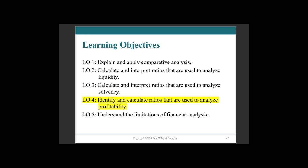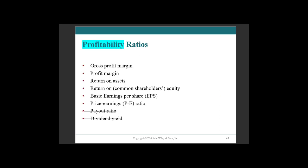How profitable are we? How are we doing? We have a bunch of different profitability ratios — here are the examinable ones. We have our gross profit and net profit, otherwise known as profit margin. ROA, return on assets. ROE, return on equity. We have our basic EPS, or earnings per share, and we have our price-to-earnings ratio.